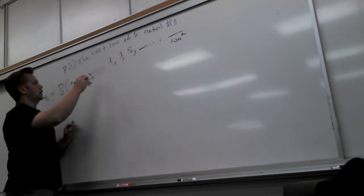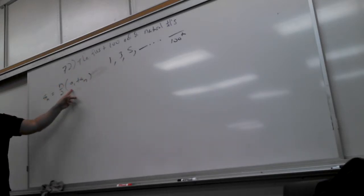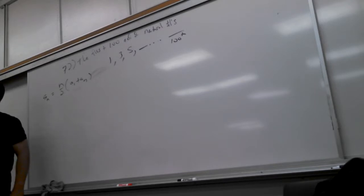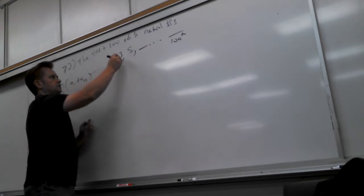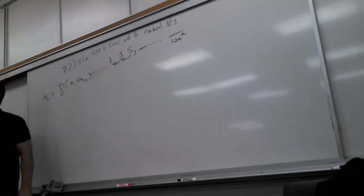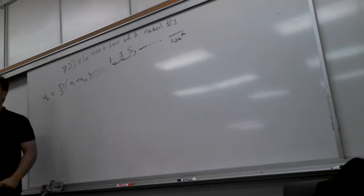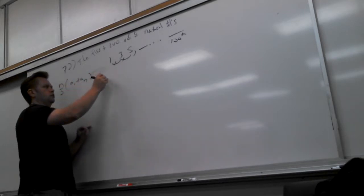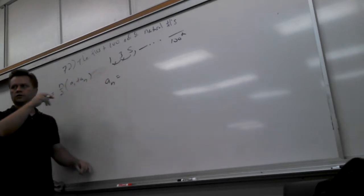There's two ways you could do it. You can either just reason it out, or you can actually just use the formula. Let's try the formula so we all remember what the formula is. What kind of sequence is this? Do I keep adding something, or do we keep multiplying something? I keep adding two. So it's got to be what kind? Arithmetic.